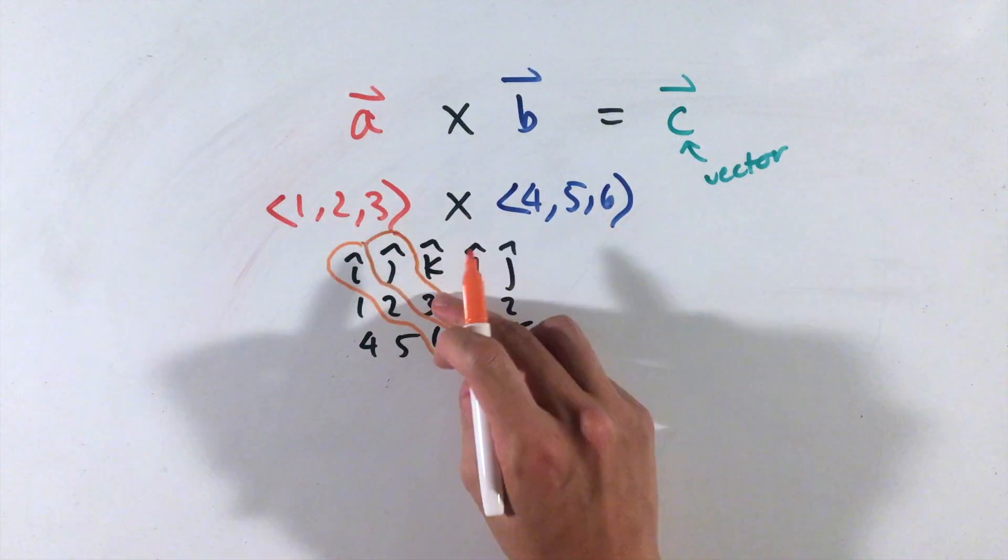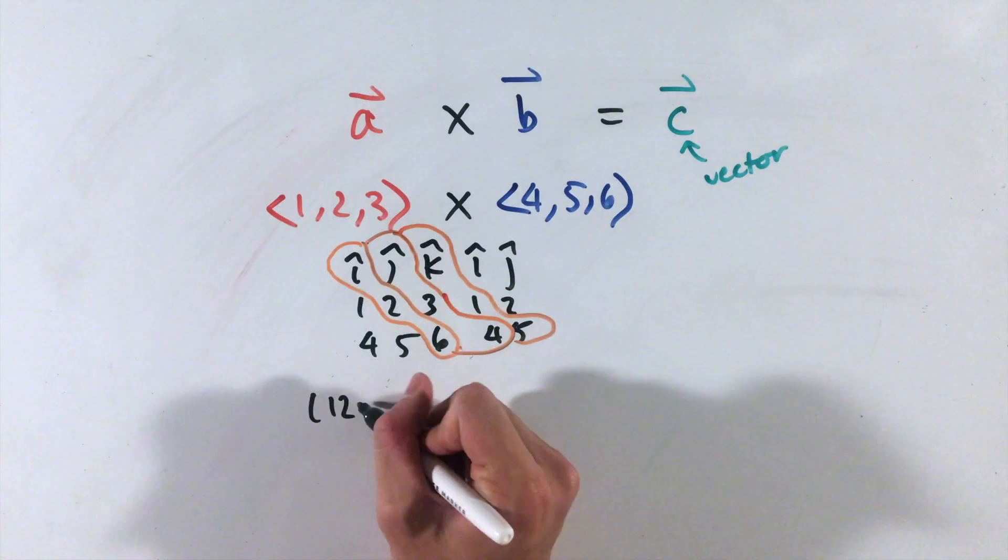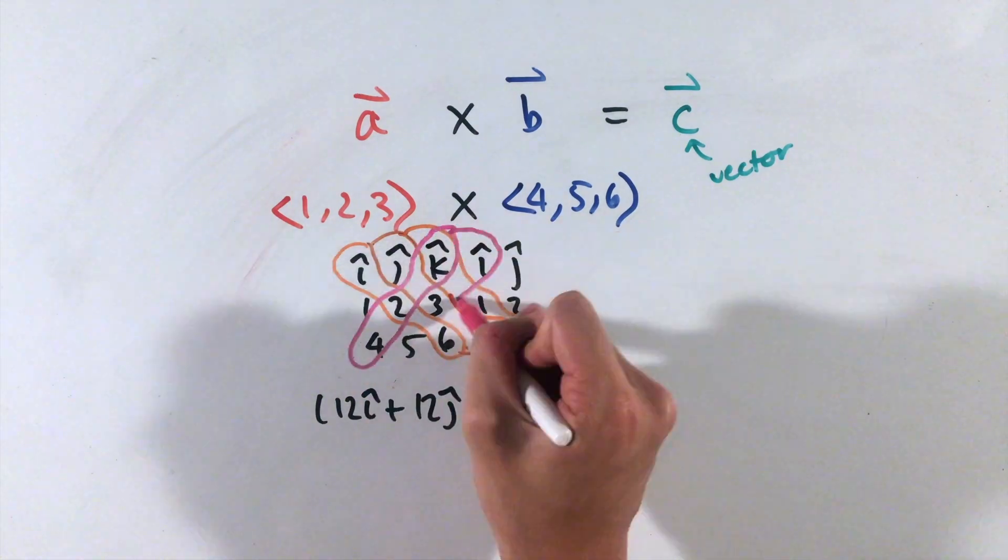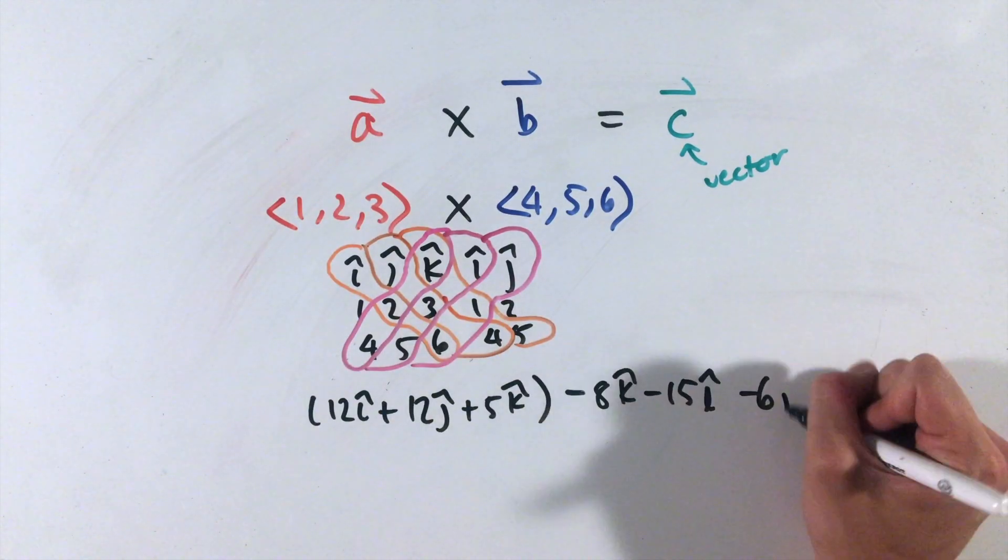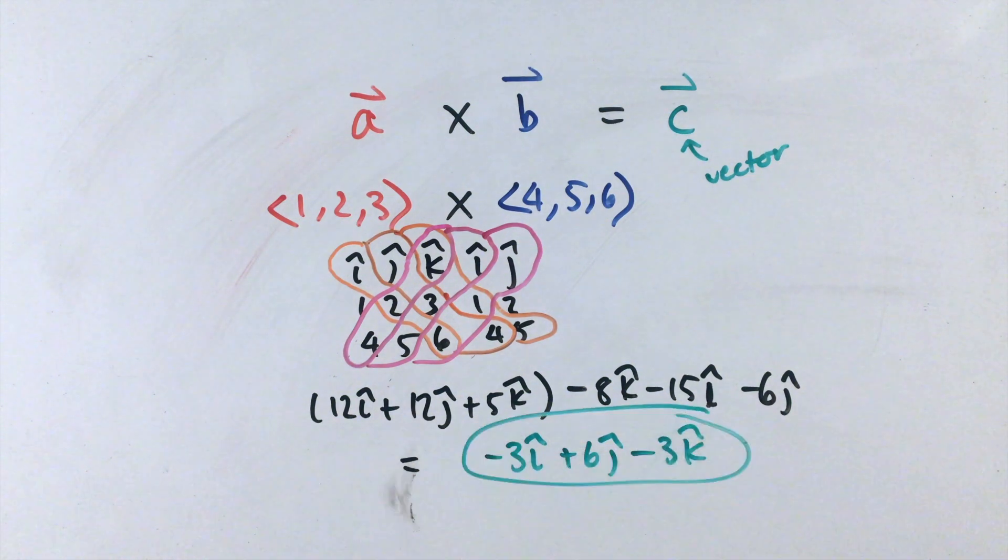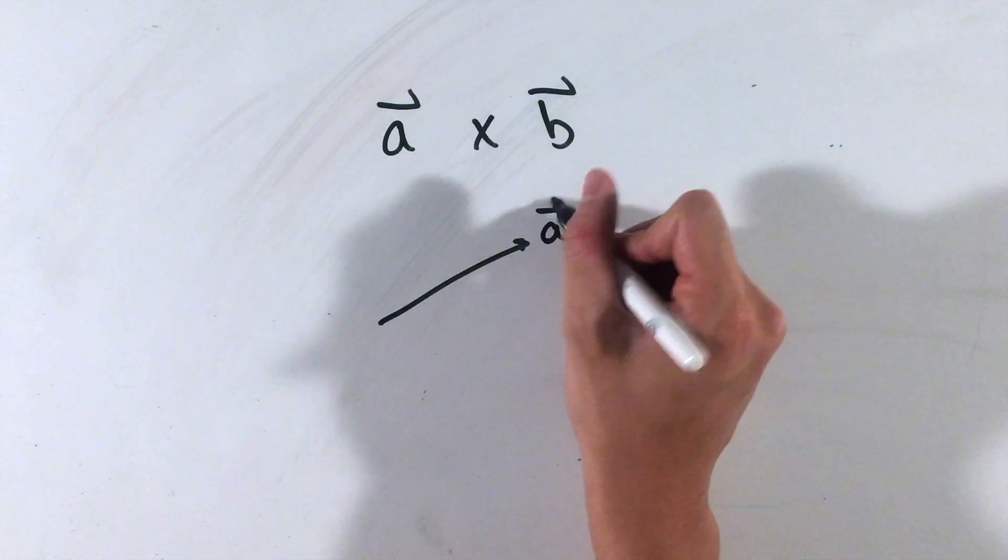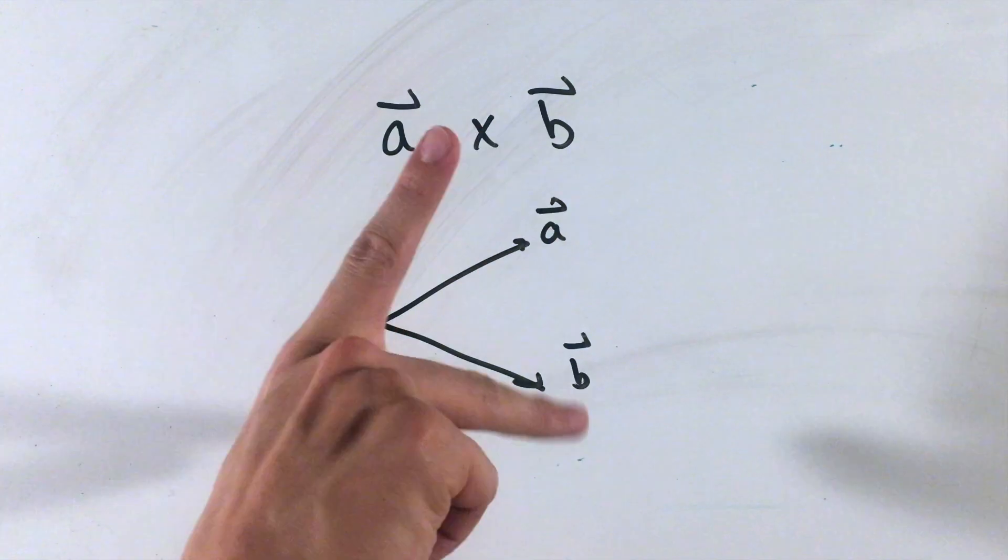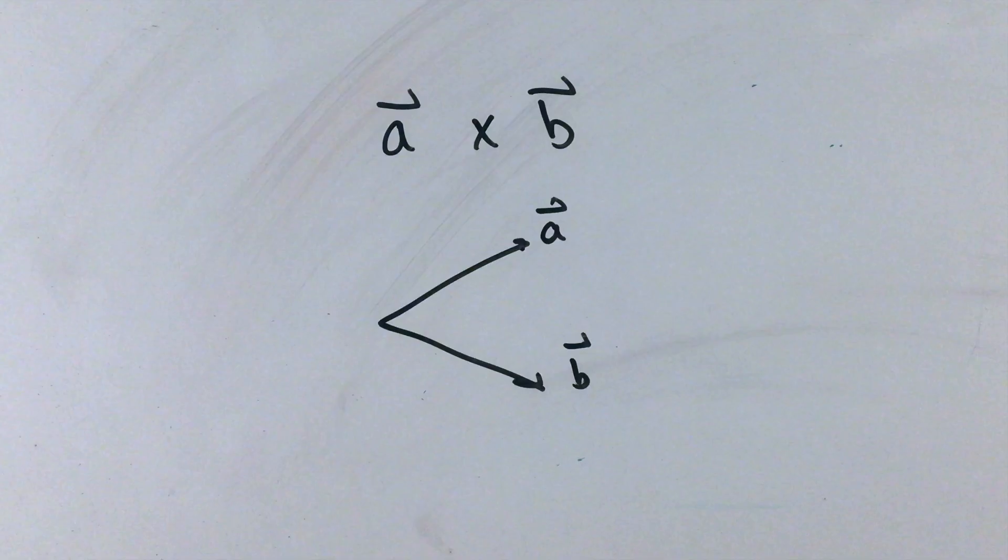From there, sum up the products of these rightward diagonals, then subtract all of these leftward diagonals, making sure to multiply by the unit vectors to keep track of your components. The direction of the cross product of two vectors can be found using the right-hand rule, pointing your right index finger in the first vector's direction, middle finger in the second direction, with your thumb pointing in the direction of the cross product.